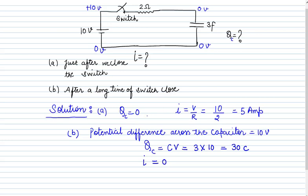To summarize: just after closing the switch, charge = 0 and current = 5 A. After a long time, charge = 30 coulombs and steady-state current = 0. One plate of the capacitor will be positively charged and the other negatively charged after full charging.